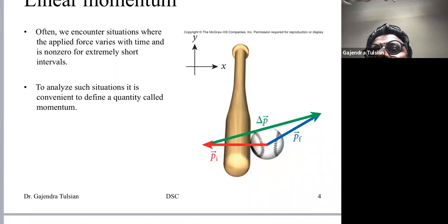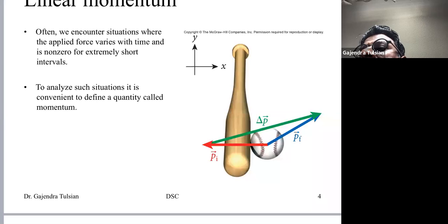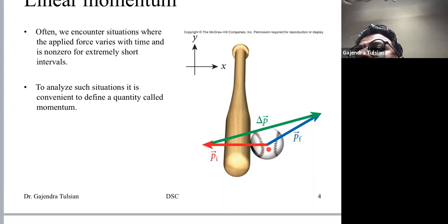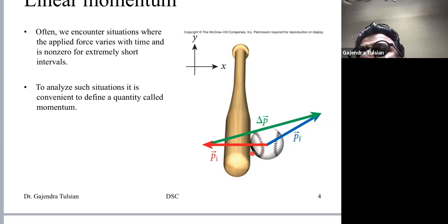Earlier I mentioned situations where a large force acts for a very small amount of time, and we define something called impulse. Here's an example: if you're playing baseball, the force the bat exerts on the ball — the peak force — can be as large as two to three thousand times the weight of the ball, but it will probably act for maybe 50 milliseconds. In these situations, it's not practical to measure the force as a function of time, so we define something called impulse.